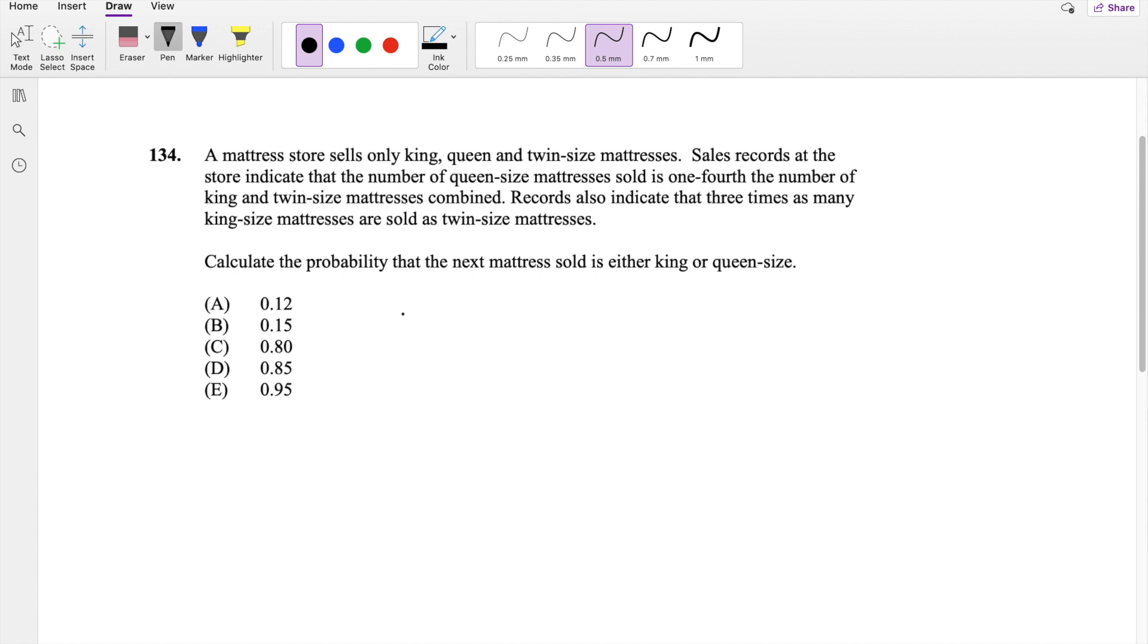Sale records indicate the probability the number of queen size mattress sold, so the number of queen size sold is one-fourth the number of king and twin size combined. Records also show that three times as many king size mattresses are sold as twin mattresses.